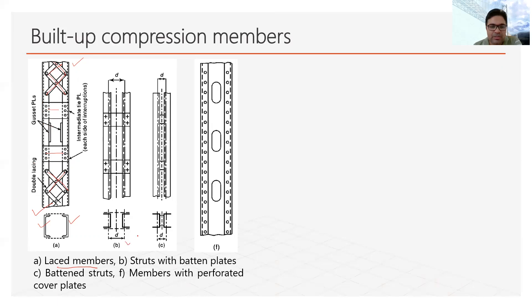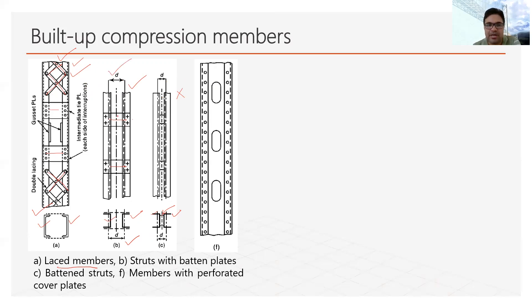In diagram B, this is struts with batten plates. Here the two channel sections are connected with horizontal plates only — no inclined members are used. There is also the batten struts type, but these are not very effective and therefore not very popular. The lacing system is the most popular connection used in built-up sections, and to some extent it is very good in supporting eccentric loads. When there is axial load only, the batten plate system is more suited, but the lacing system remains the best overall configuration.